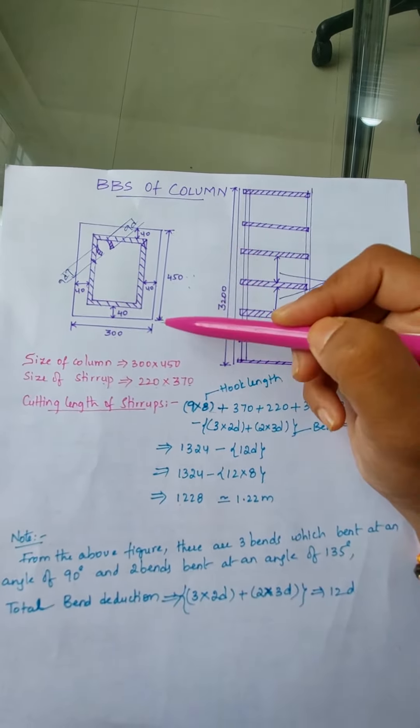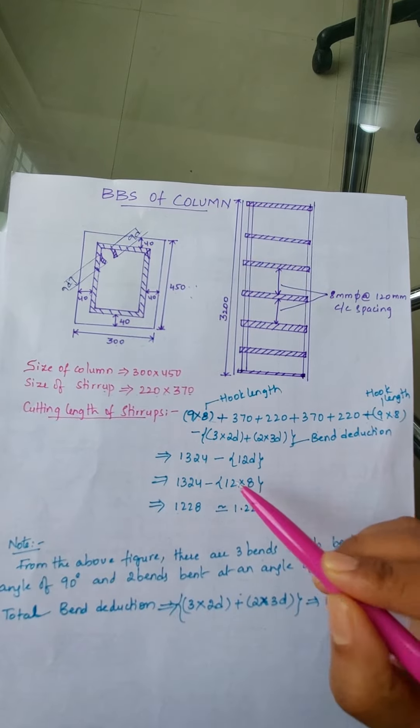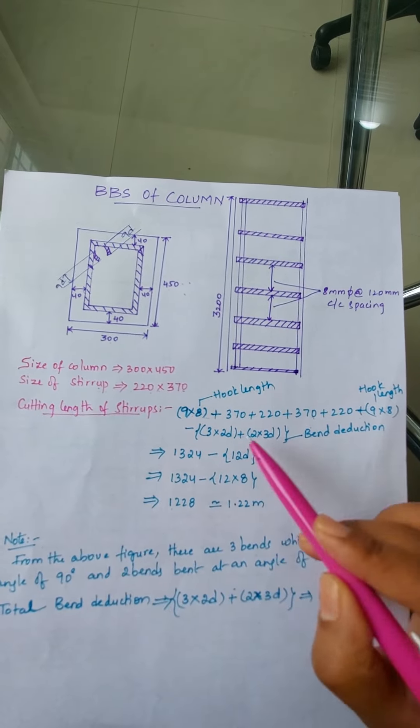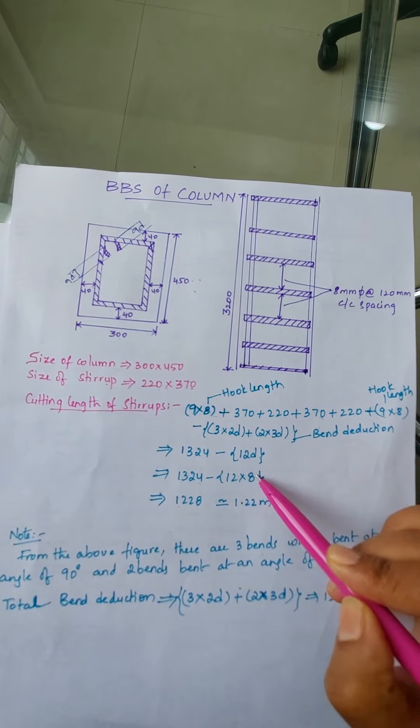Bend deduction details are given here. How will we get this 12d? This 12d, after adding all this we'll get 1324, so minus 12 into d. d is nothing but 8mm, so we will get 1.22 meters.